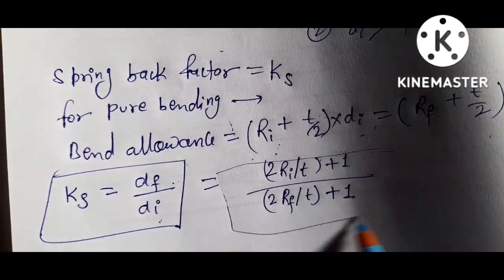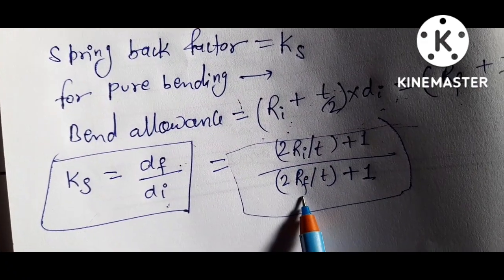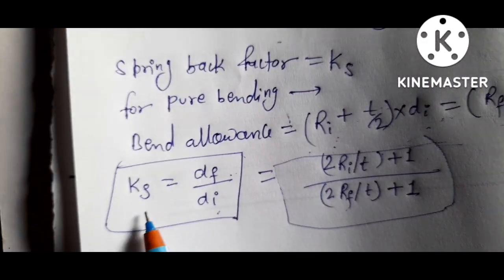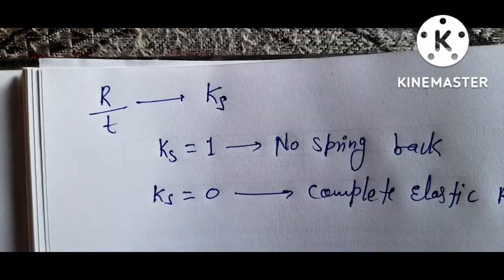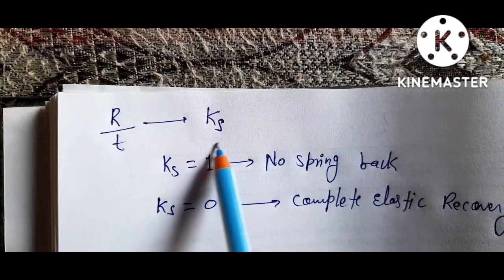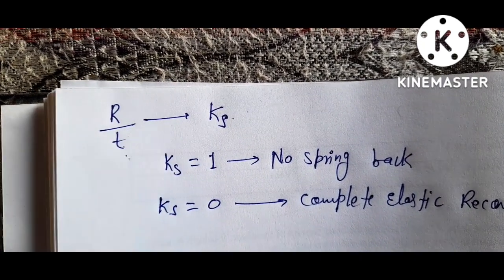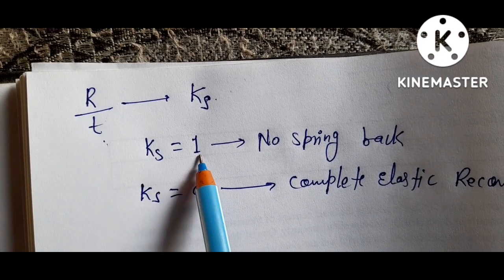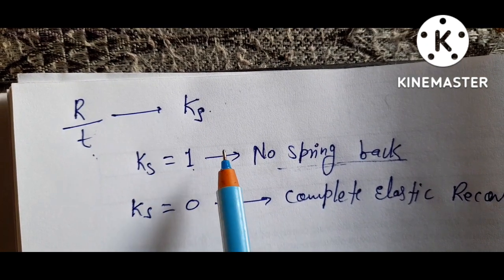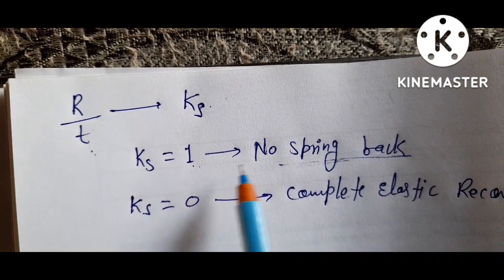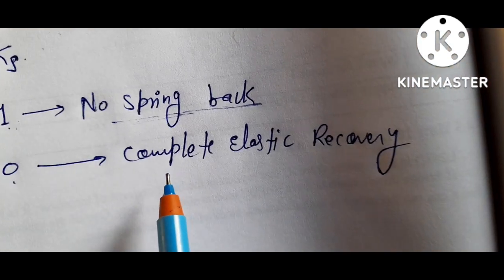Here ri equals the initial bend radius and rf equals the final bend radius. Spring back factor Ks equals alpha f (final bend angle) divided by alpha i (initial bend angle). Ks only depends on the r/t ratio. If Ks equals 1, there is no spring back. If Ks equals 0, there is complete spring back — meaning complete elastic recovery.